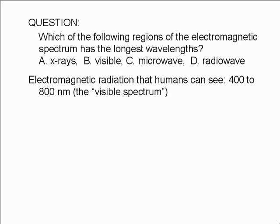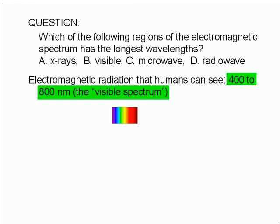For us to be able to see electromagnetic radiation, its wavelength must be between 400 and 800 nanometers. This is known as the visible spectrum. Electromagnetic radiation that we perceive as violet is at the shorter wavelength end of the visible spectrum.